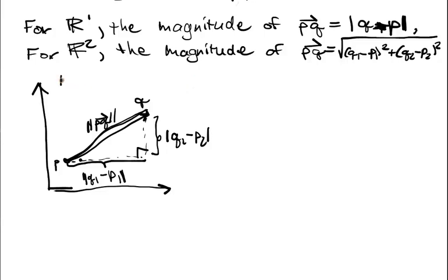And so when we relate all these things together, we have that PQ arrow square is equal to, by the Pythagorean theorem, Q1 minus P1 square plus Q2 minus P2 square. And since the square gets rid of the absolute value, we essentially get this formula when we take square roots.